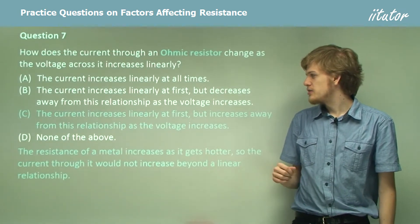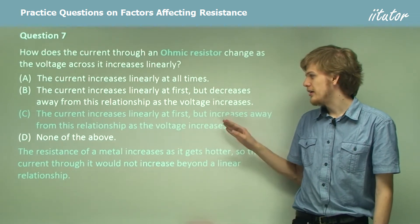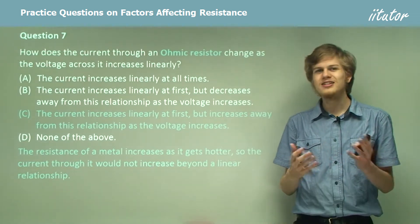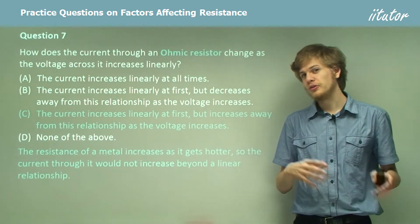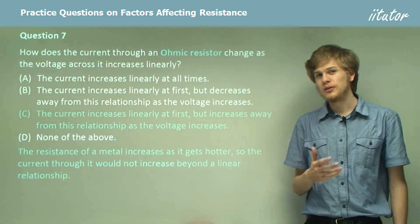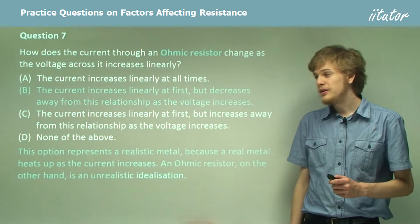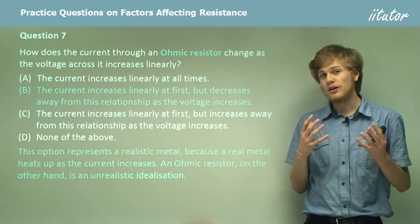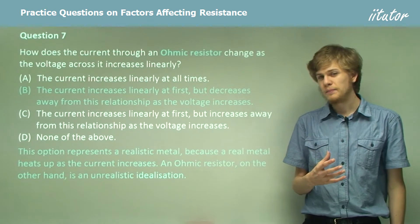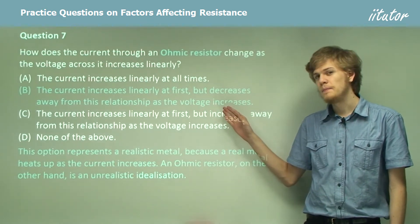Part C says the current increases linearly at first but then increases away. This would mean we're getting energy from nowhere — for a relatively low voltage we'd have a huge amount of electric current. Part B says the higher we try to get the current, the higher the resistance gets, so we decrease away.